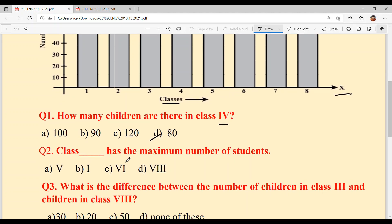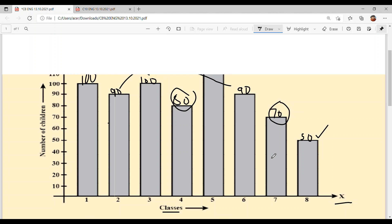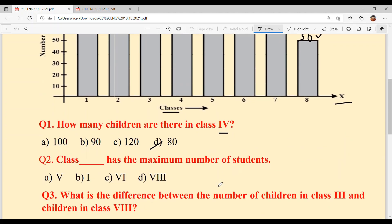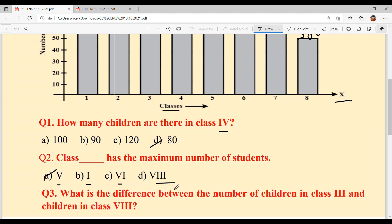Next. Class dash has the maximum number of students. Which has the maximum? Class fifth. Option A. It is written in roman numerals. That is fifth, first, sixth, and eighth.